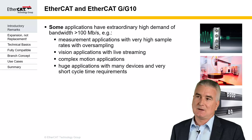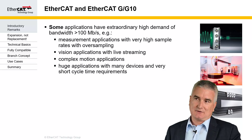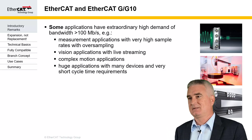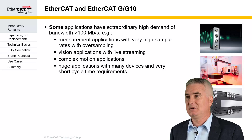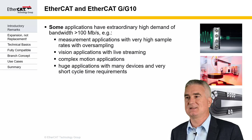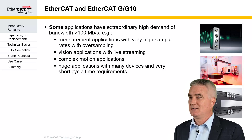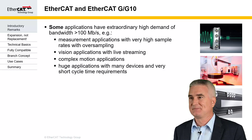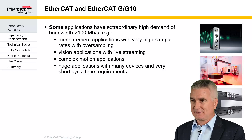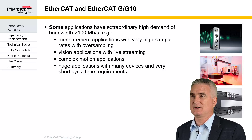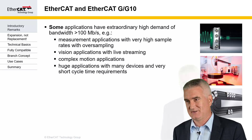And then there are applications with a huge number of devices that still require very short cycle times for various reasons. Today, this is solved by using multiple EtherCAT networks to a single controller. This is doable and possible. But if you just want to use one single network, you need more bandwidth than 100 megabit EtherCAT can provide today.